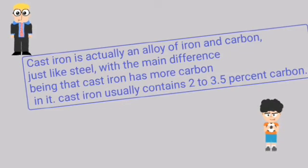Cast iron is actually an alloy of iron and carbon, just like steel, with the main difference being that cast iron has more carbon in it. Cast iron usually contains 2 to 3.5% carbon.